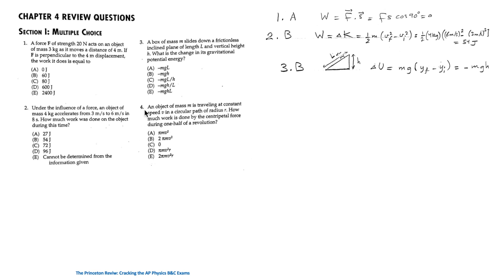For question 4, an object of mass M travels at constant speed V in a circular path of radius R — uniform circular motion. The work done by the centripetal force during one half of a revolution is 0, answer C. This is because the centripetal force always points along the radius toward the center, and the velocity is always tangent to the circle and therefore always perpendicular to the radius. Alternatively, because the object's speed remains constant, the work-energy theorem confirms no work is being performed.